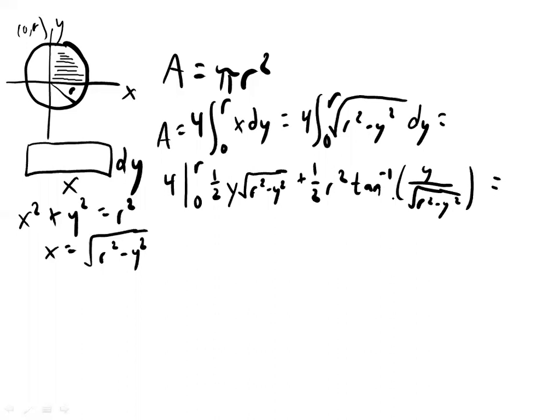And so now we can just plug in these values here. So this is going to be 4 times the large expression, 1 half, plugging in r for y, r squared minus r squared. That's going to end up being 0. Tan inverse r. Again, r squared minus r squared. That denominator is going to be equal to 0.